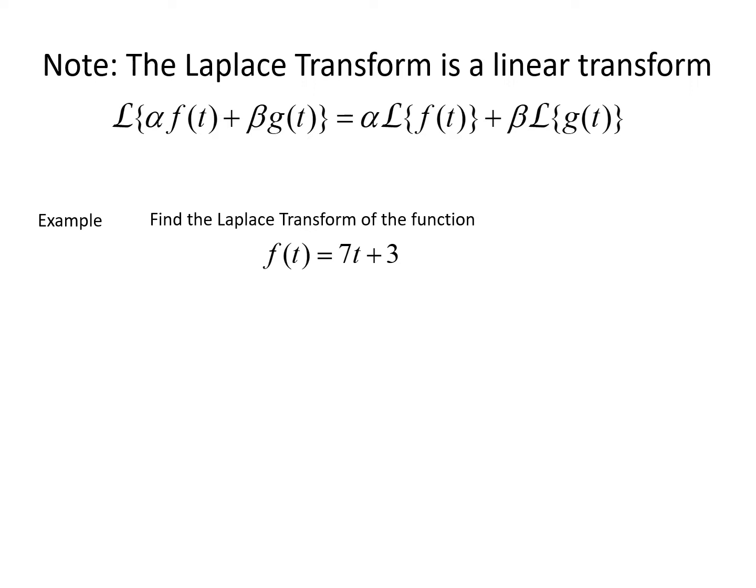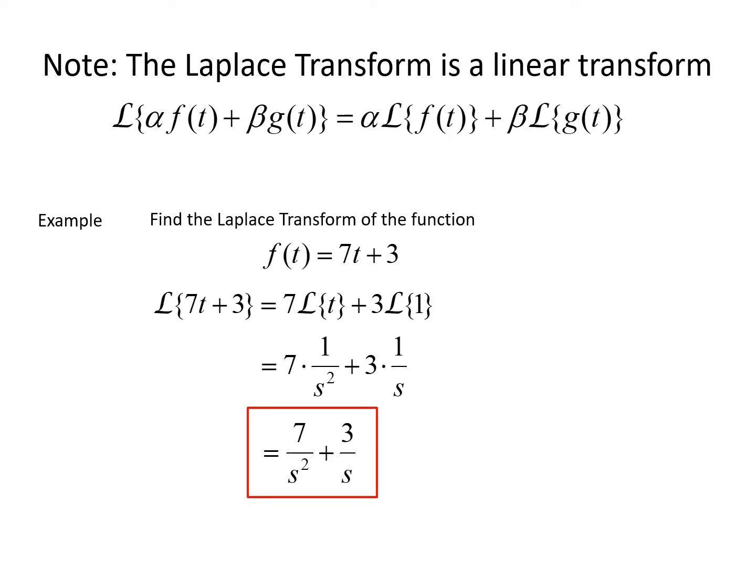We want to find the Laplace transform of f of t equals 7t plus 3. Looking at it term by term, the Laplace transform of 7t plus 3 equals 7 times the Laplace transform of t, plus 3 times the Laplace transform of 1. Using the formulas: the Laplace transform of t is 1 factorial over s to the 1 plus 1, which gives 1 over s squared. The Laplace transform of 1 is 1 over s. Simplifying, the result is 7 over s squared plus 3 over s.